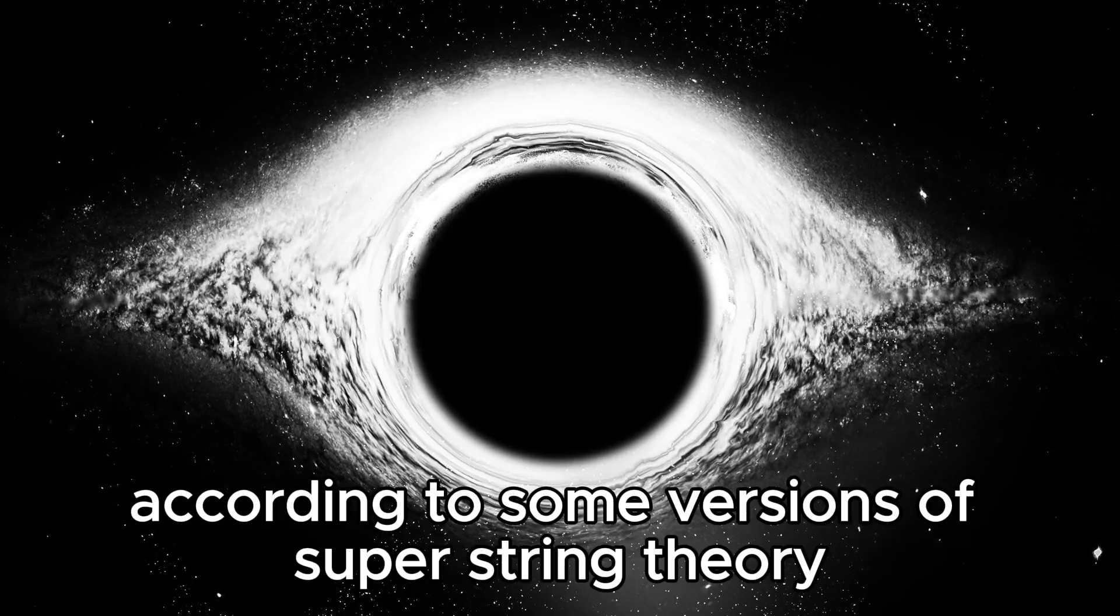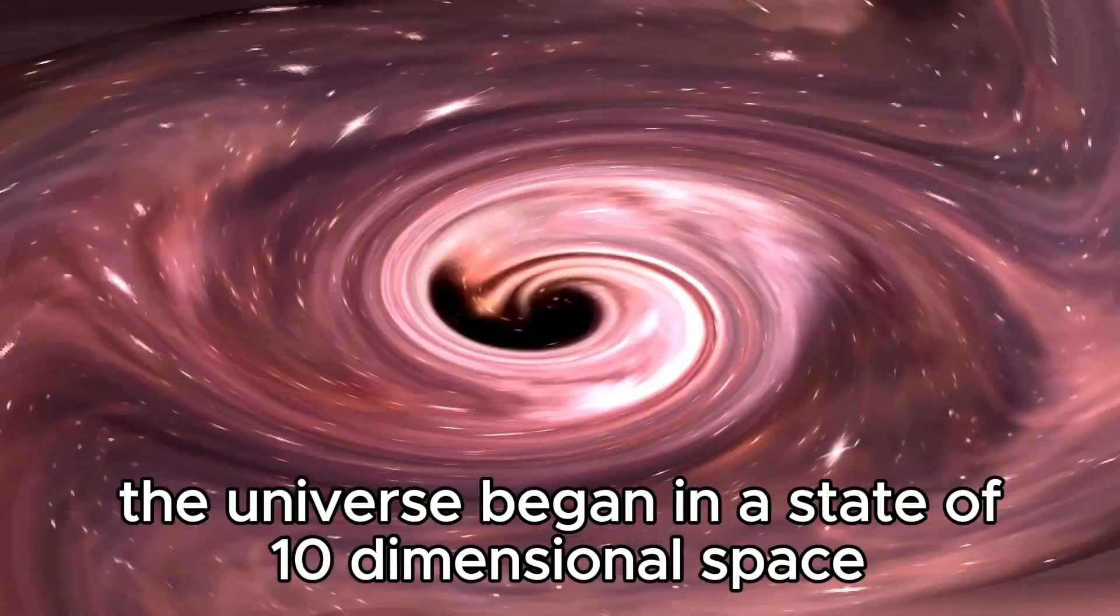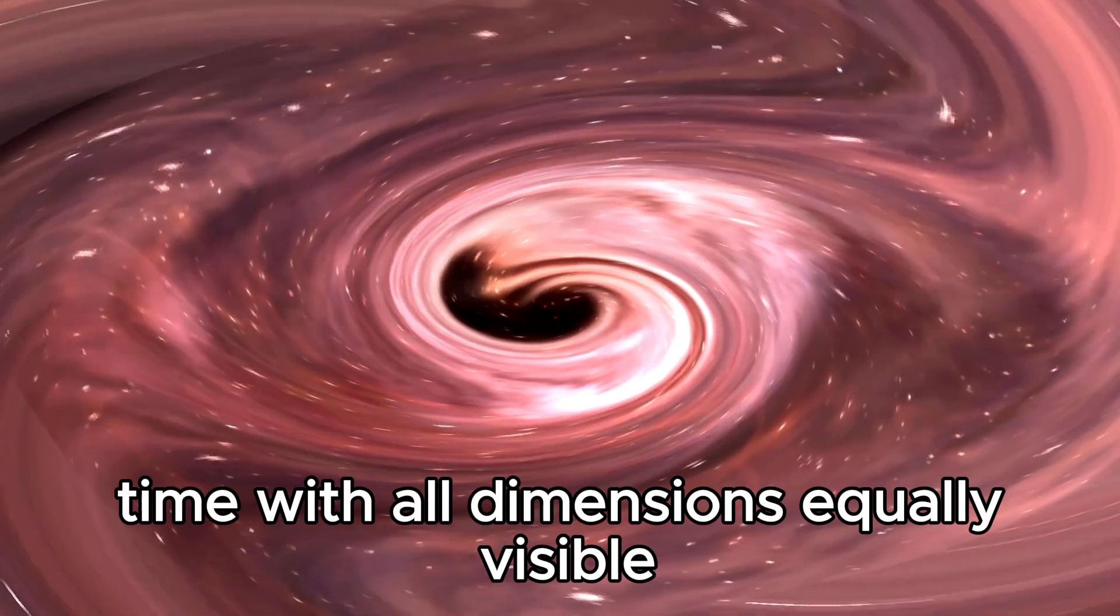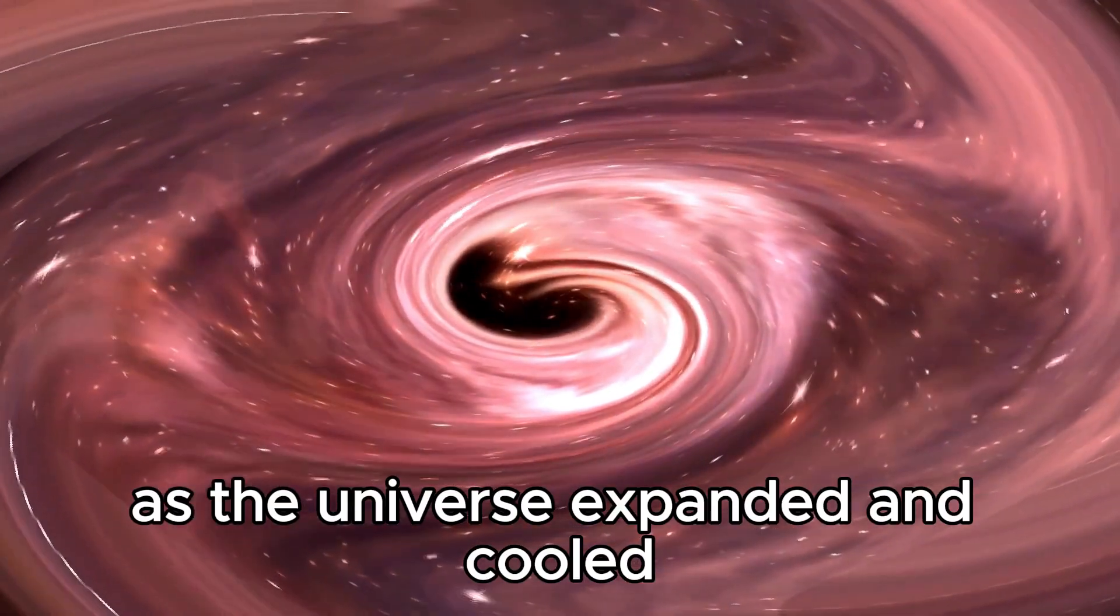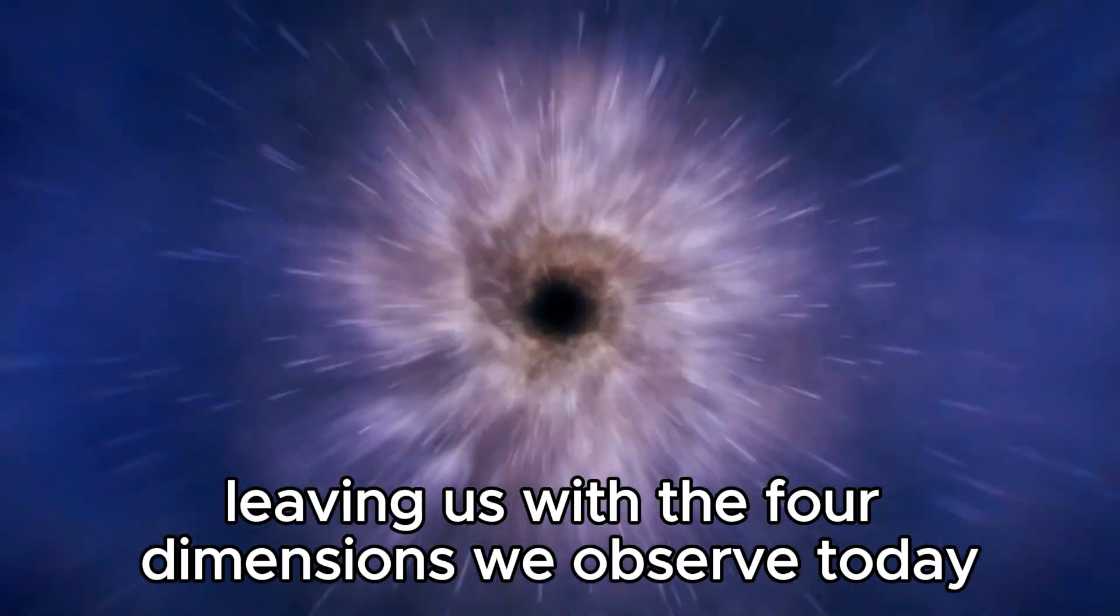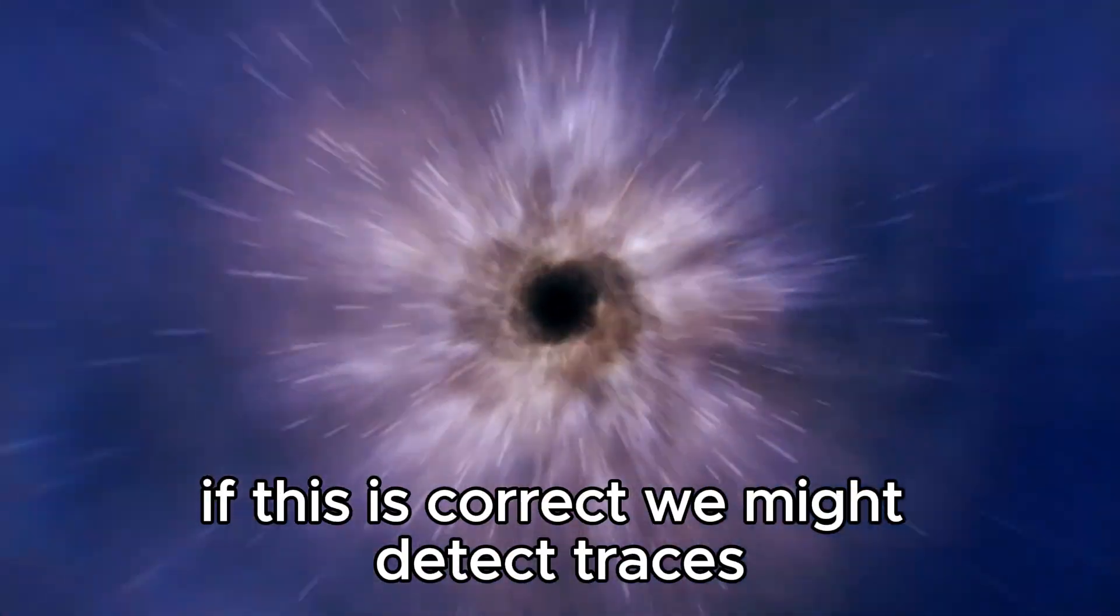According to some versions of superstring theory, the universe began in a state of ten-dimensional space-time with all dimensions equally visible. As the universe expanded and cooled, the extra dimensions began to collapse and curl up, leaving us with the four dimensions we observe today. If this is correct, we might detect traces of the extra dimensions around us.